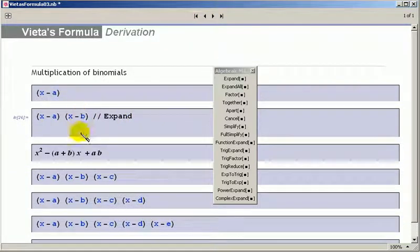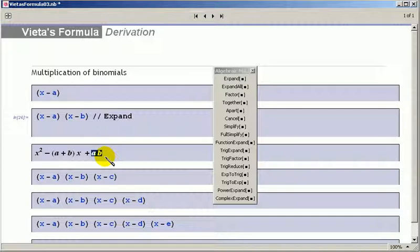It goes further here. Look at this. The last term, the constant term, the term that does not have the x in it, is the product of the roots. Because the roots were a and b, if you multiply them, that's what you get.